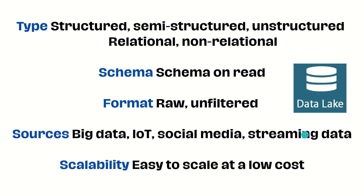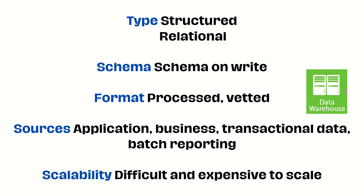The format in a data lake is raw and unfiltered. Sources include big data, IoT sensors, social media, and streaming data. Scalability is very easy and low cost. For a data warehouse, on the other hand, the data is structured and relational. The schema is schema-on-write — a traditional approach where data is first structured and transformed before being loaded. This ensures data integrity and consistency but can be time consuming. The format is completely processed and vetted. Sources include transactional and business application data. Scalability is difficult and expensive.